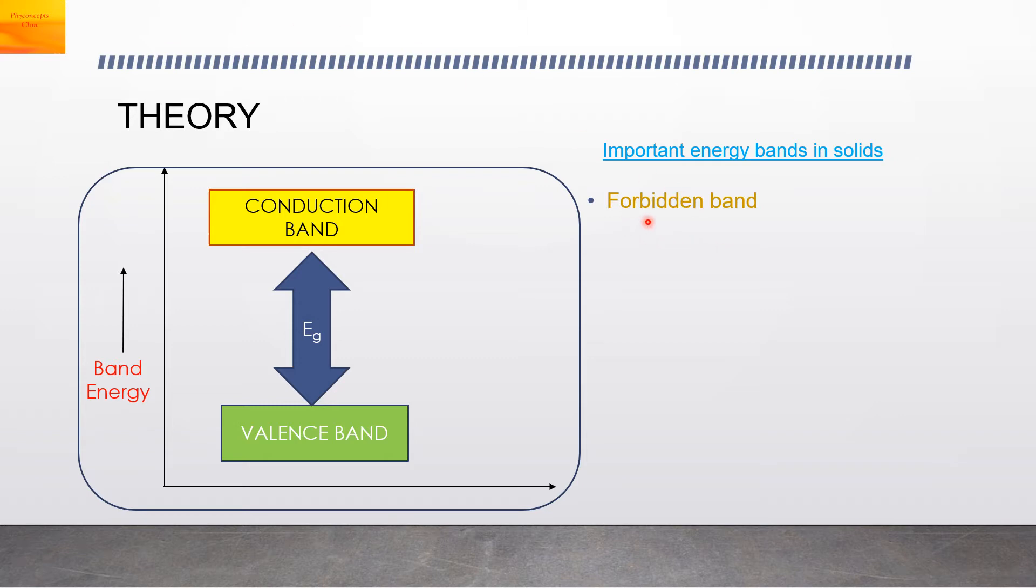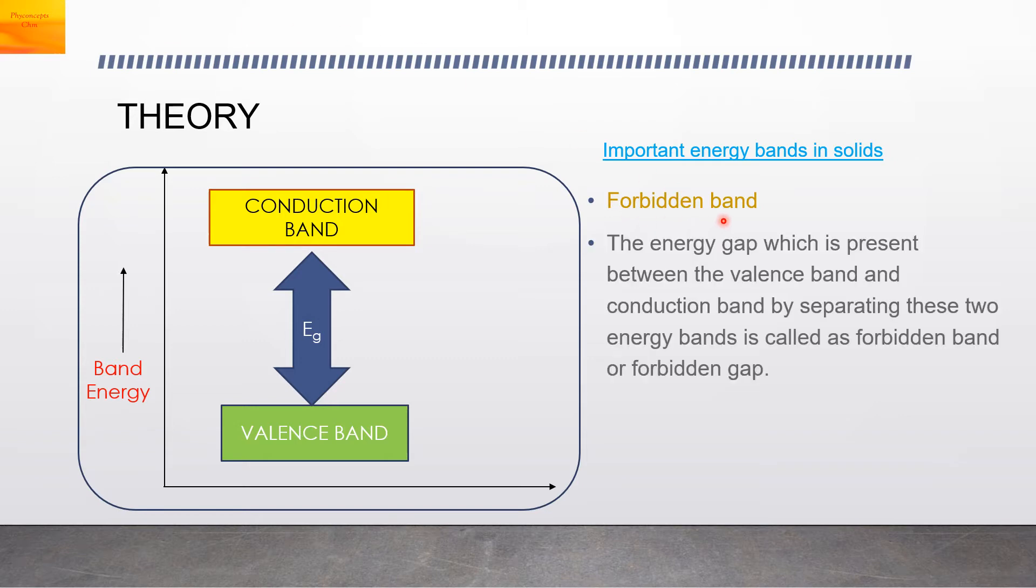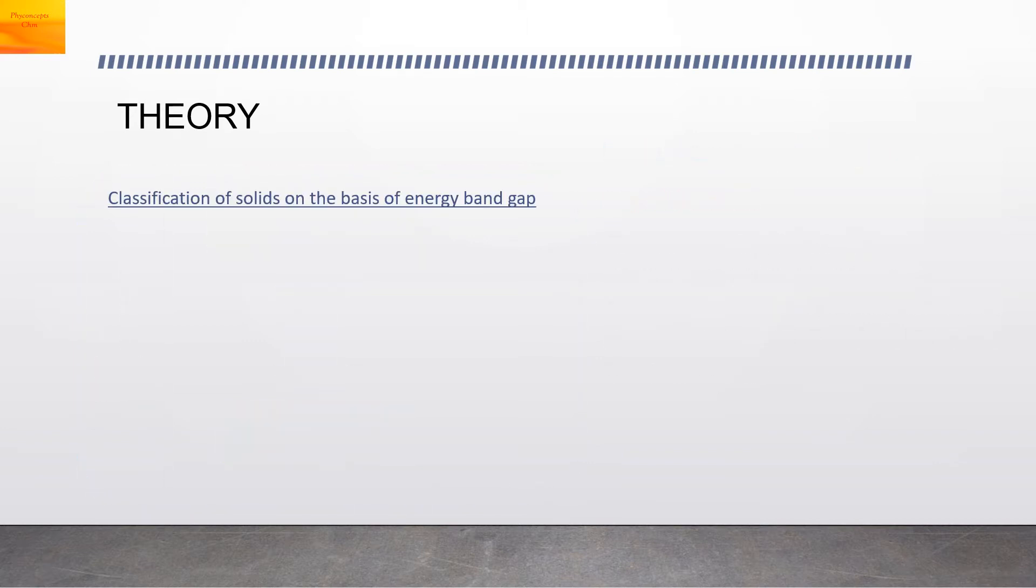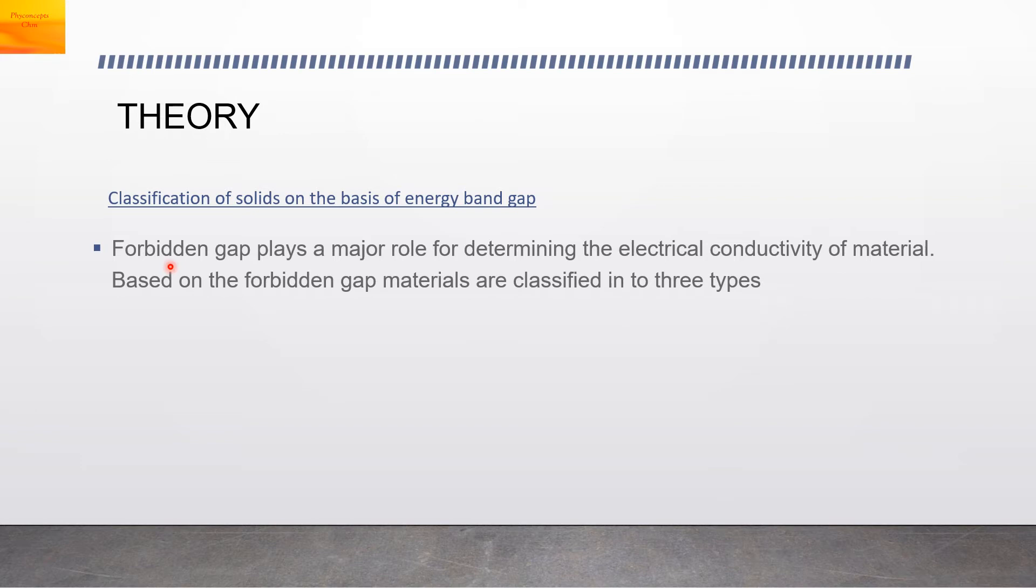Third one is the forbidden band. The energy gap which is present between the valence band and the conduction band by separating these two energy bands is called the forbidden band or forbidden gap. Forbidden gap plays a major role in determining the electrical conductivity of a material. Based on this forbidden gap, materials are classified into three types.